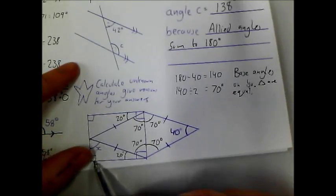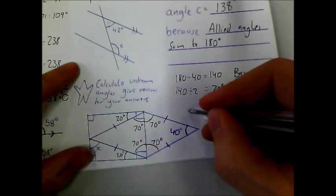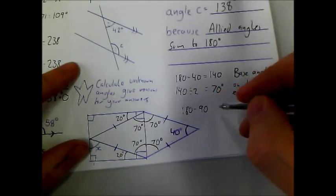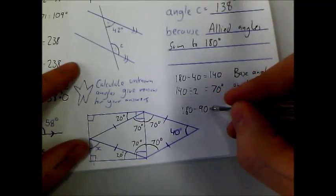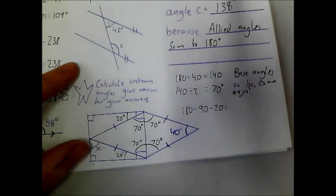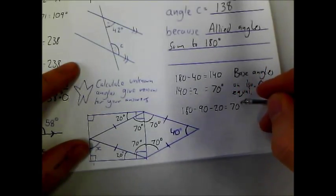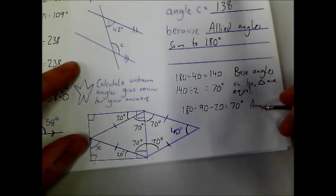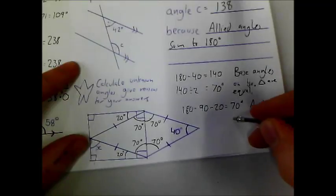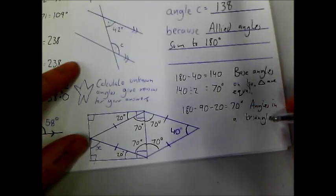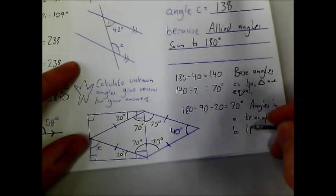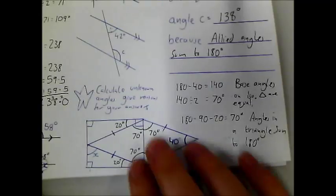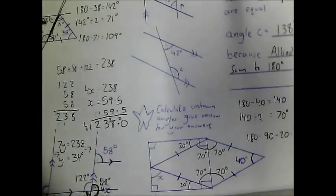These add up to 180. Take off 90, add up to 90, take off 20. So if I do 180 take away 90 take away 20, that is 70 degrees. So that's what angle X is. The reason is that angles in a triangle sum to 180 degrees. You should have at least two reasons for this question. Well done if you tried that, and see me in class if you need some help.